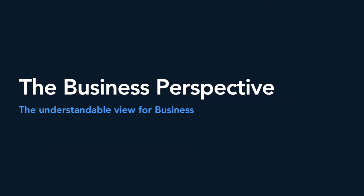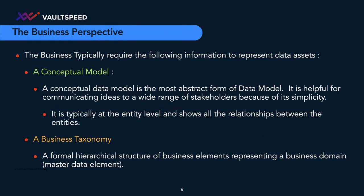Looking at the second part: we talked about automation, but what is the requirement of the business? The business wants to have an understandable view of the data structure and which data elements exist. What they typically require — and what we use to communicate with them, both now as a product company and back from 2008 when we were building these data systems at customers — is an easy way to communicate. The first tool for that is a conceptual model, which is a very high-level form of model, very easy and simple, and therefore very easy to communicate with the business. It's typically at the entity level and shows relationships between entities, but that's typically where it stops.